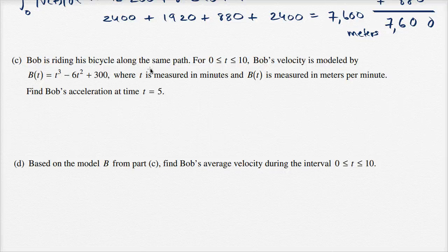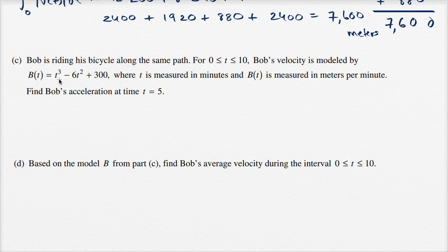Bob is riding his bicycle along the same path. For 0 ≤ t ≤ 10, Bob's velocity is modeled by b(t) = t³ − 6t² + 300, where t is measured in minutes and b(t) is measured in meters per minute.